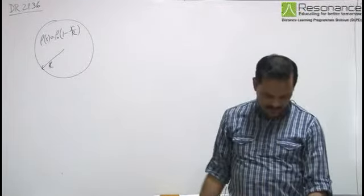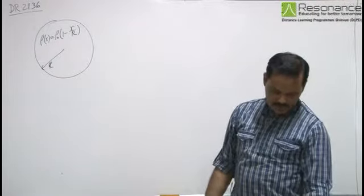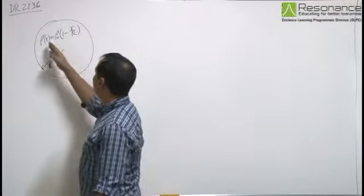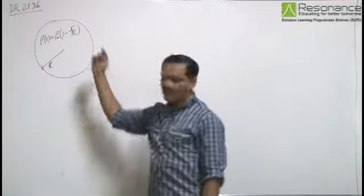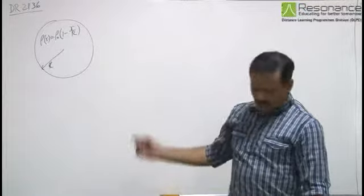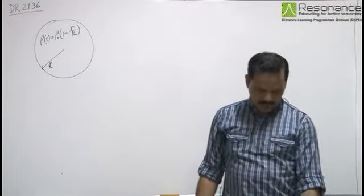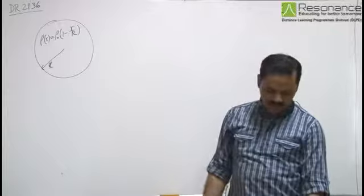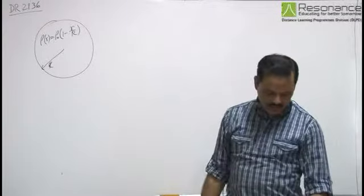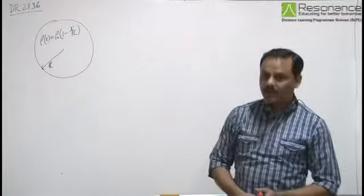We have a ball of radius capital R with a positive charge having volume density which depends upon r only. The volume density at a distance r from the center is given as ρ₀(1 - r/R), where ρ₀ is a constant. Assume the permittivities of the ball and environment equal to unity. We need to find the magnitude of electric field strength as a function of distance r from the center, both inside and outside the ball, and also the maximum intensity and its corresponding distance.